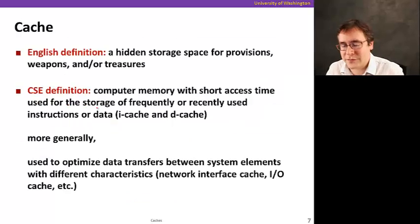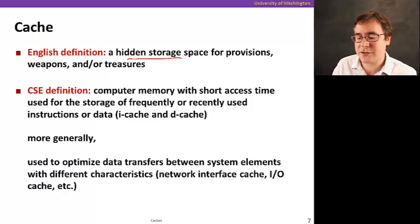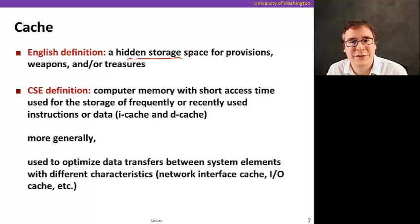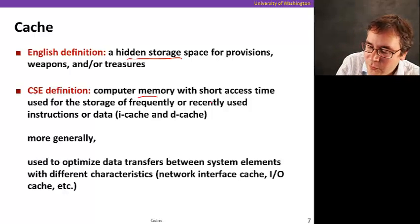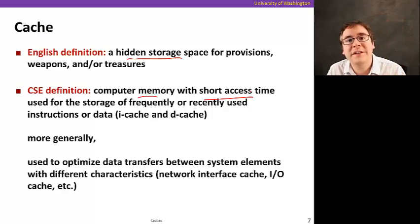So let's think about the word cache for a second. The English definition is a hidden storage space for provisions, weapons, or treasures. In our case, your treasure is data. In computer science, the definition is a computer memory with short access time used for storage of data or code that's accessed frequently or recently. And more generally, it's essentially used to optimize data transfers between system elements with different characteristics. You could imagine caches, you have a cache for pages in your browser. It's a form of cache. You can cache IO to disk because disks are also not very fast. So if you access data repeatedly, you can put data in a faster memory. These are all forms of caches.